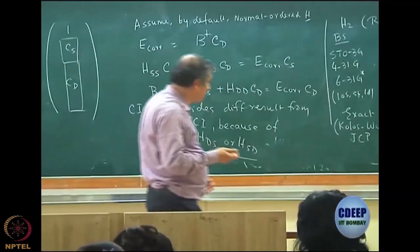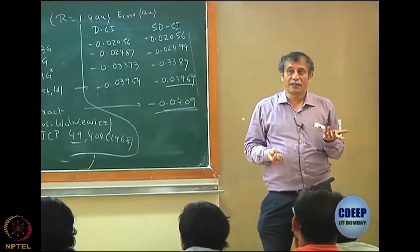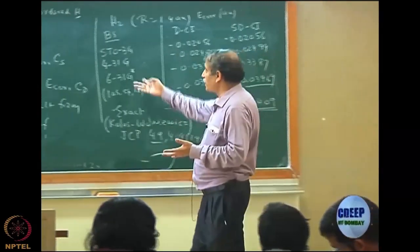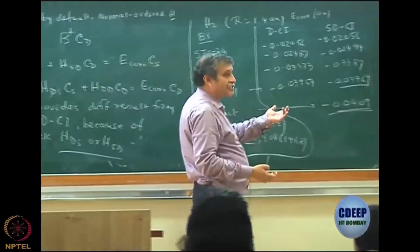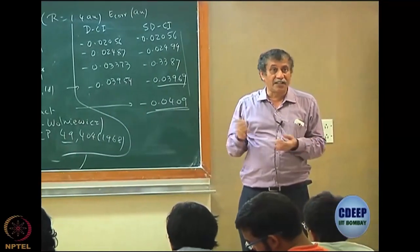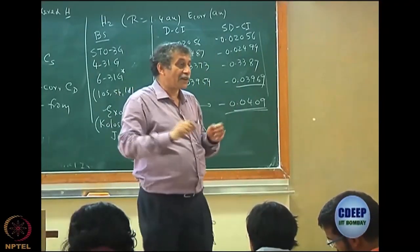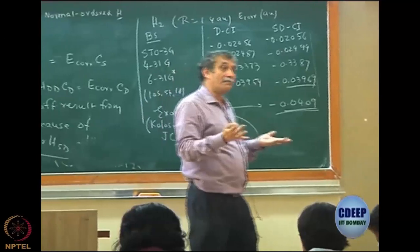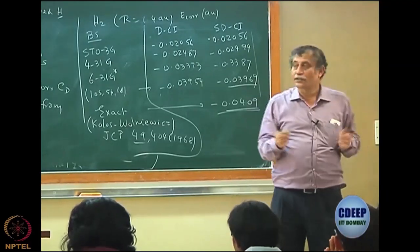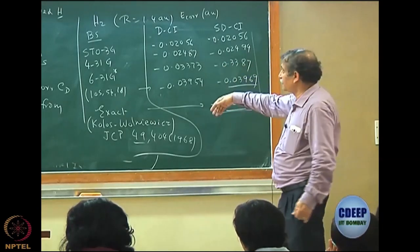As the basis set increases, the effect of singles on the correlation energy actually increases. Of course, the Hartree-Fock energy is also changing, so the total energy change will be even more. Here we are only discussing correlation energy — for each number, the Hartree-Fock energy in that basis is subtracted. Since Hartree-Fock changes from one basis to another, you are not subtracting the same number, so there is a difference when you calculate total energies.